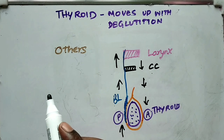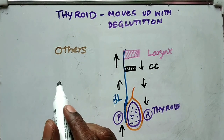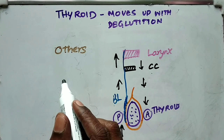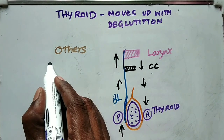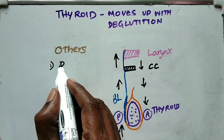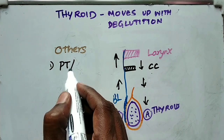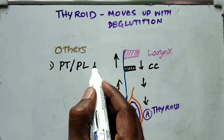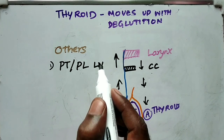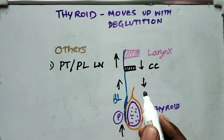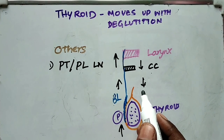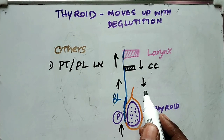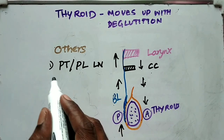What are the other swellings that move up and down with deglutition apart from thyroid swelling? Number one is the pretracheal and prelaryngeal lymph nodes. The lymph nodes that are present within the pretracheal fascia also move up and down with deglutition.